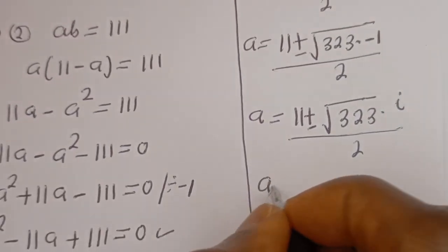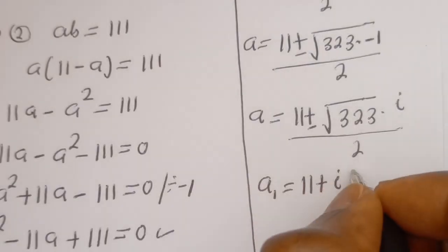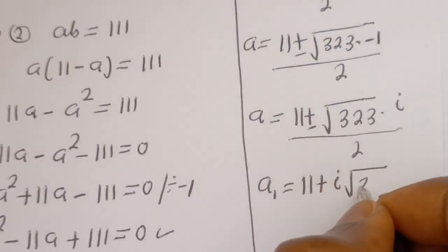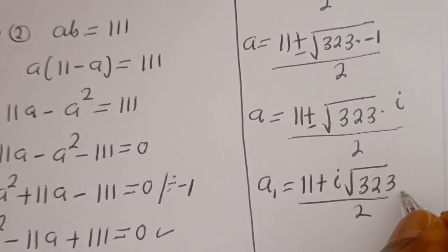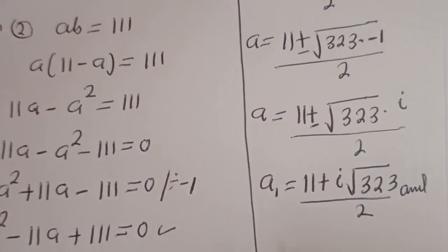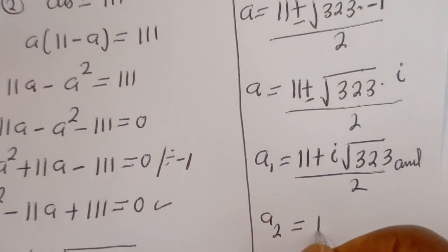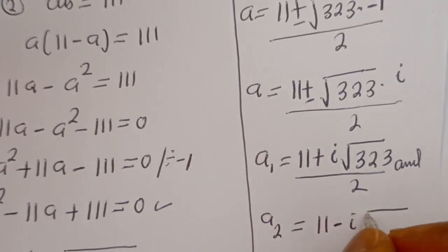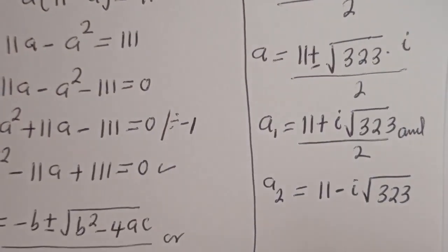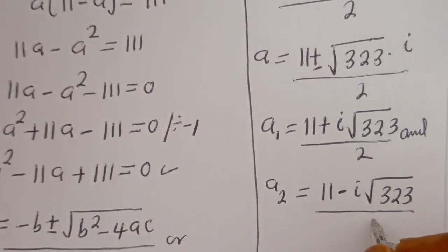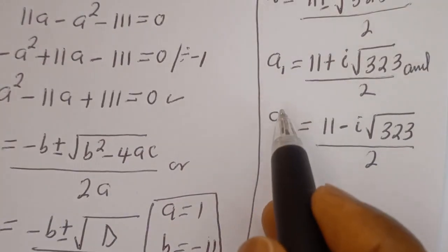Therefore A1 equals (11 plus i√323) over 2, and A2 equals (11 minus i√323) over 2. We have now obtained the values of A1 and A2.